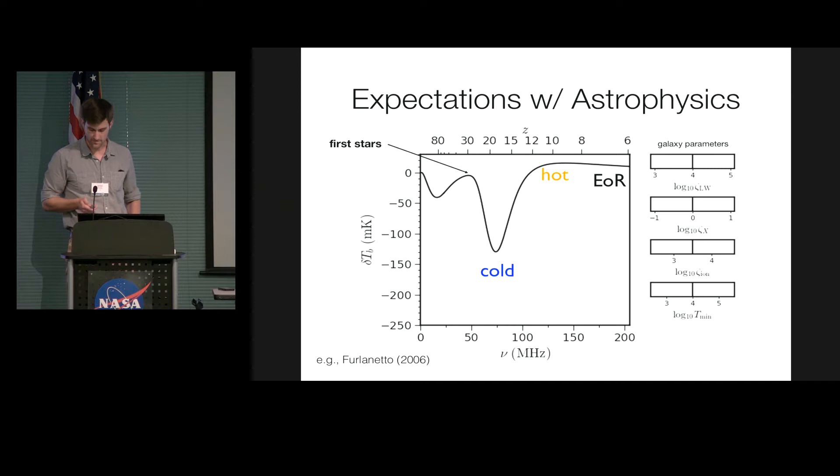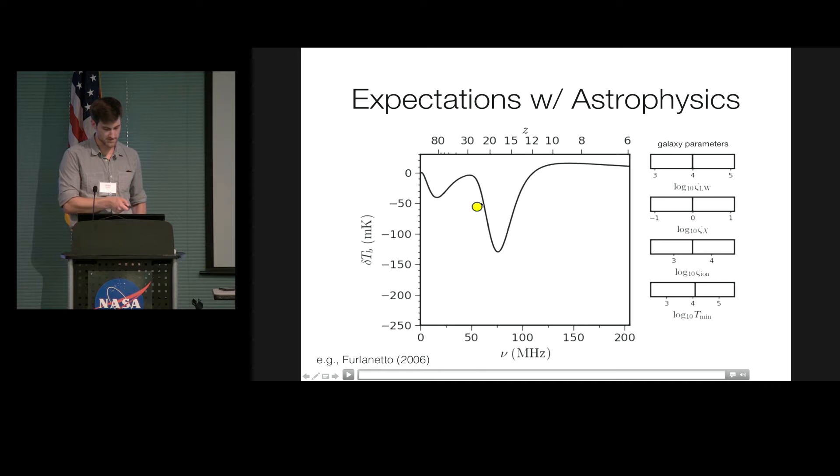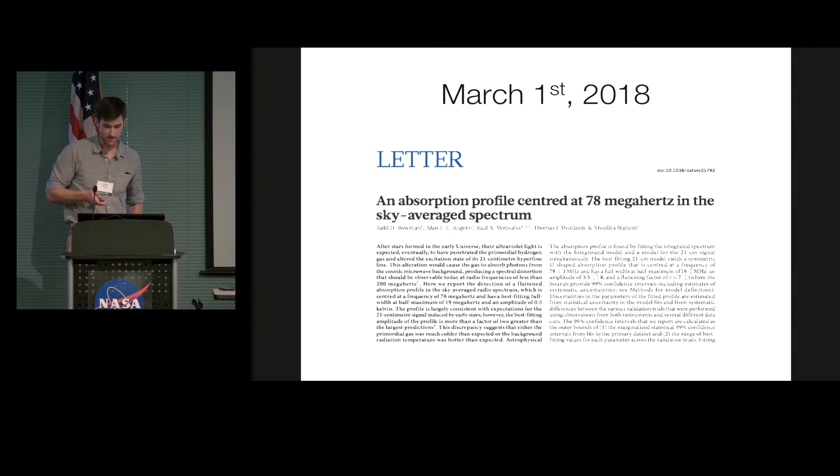Now, after the first stars turn on, this becomes kind of a mess. And depending on what we think about how galaxies form, the features of the signal can move all over the place. And so the game in this field, we thought, anyways, until recently, was going to be to try to measure the features of the signal and to kind of reverse engineer what the parameters of galaxy formation must be. But importantly, you'll notice in all of this that this feature at very low frequencies stays the same. And that's because it's just at such early times that stars haven't formed yet and they can't influence the signal.